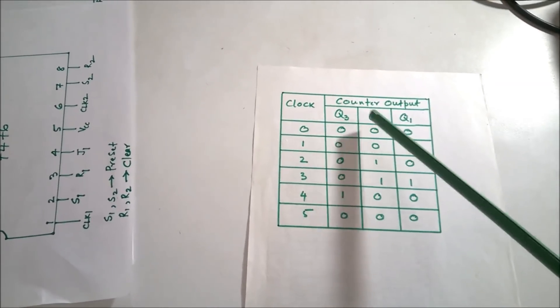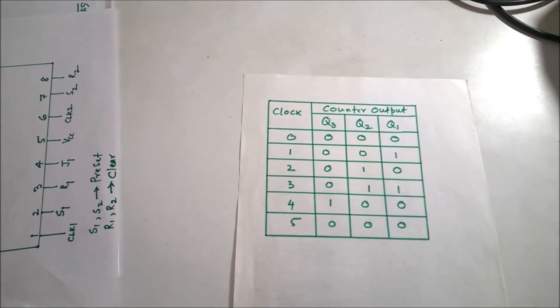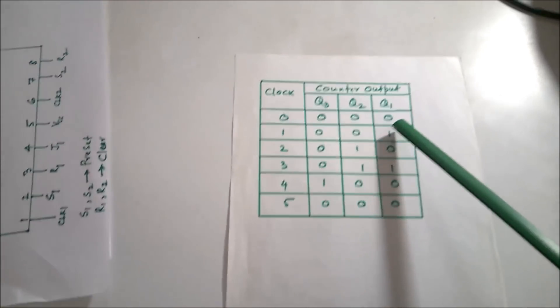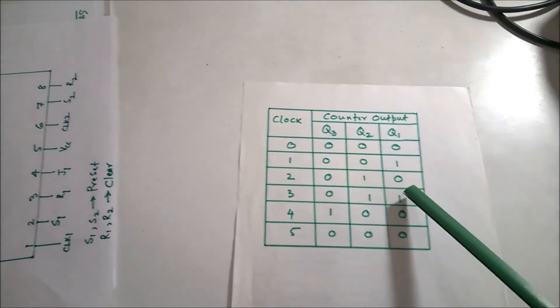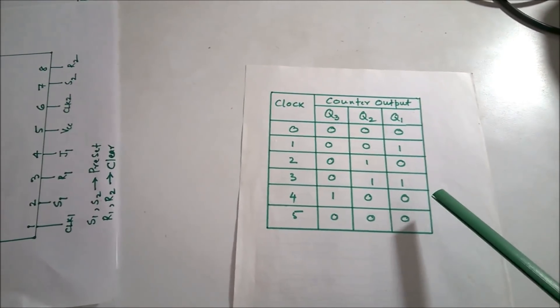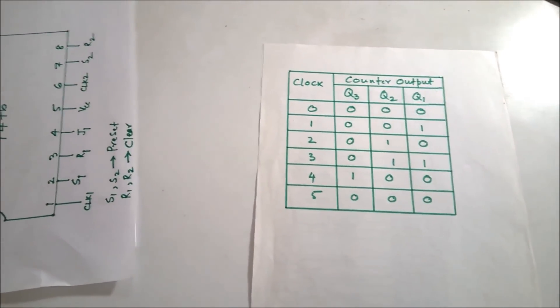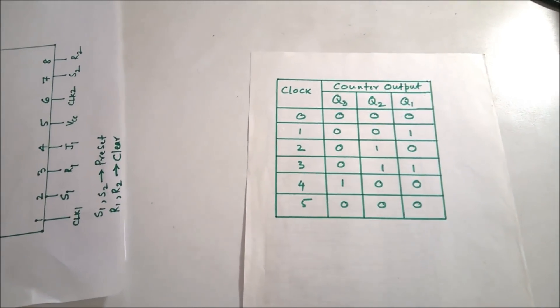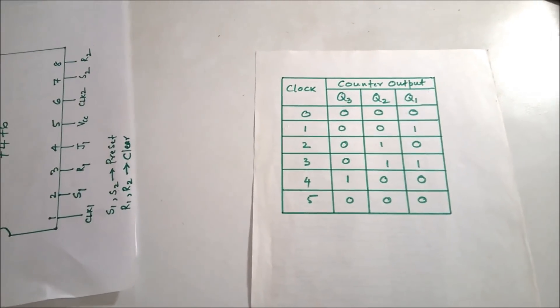In the lab we are implementing the mod-5 counter with JK flip-flops. As the clock pulses arrive, Q3, Q2, Q1 count: first clock pulse gives 0-0-1 (decimal 1), second gives 0-1-0 (decimal 2), third gives 0-1-1 (decimal 3). It goes up to 4, and when the fifth clock pulse arrives it resets back to 0-0-0 because it is a mod-5 counter.